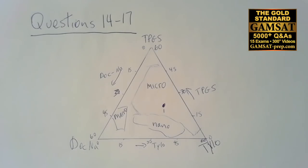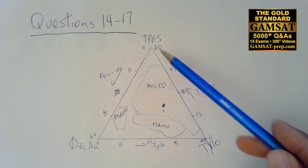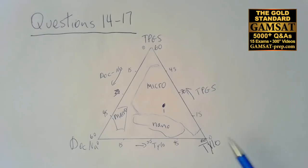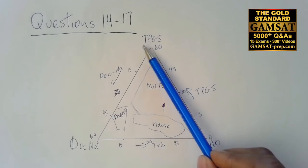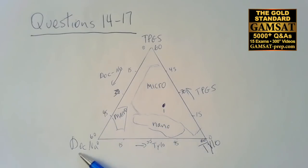And the other thing that I would do right from the beginning is I would label the corners. I can see that this is increasing TPGS so I put TPGS at the top, increasing DOCNA so I put DOCNA in the bottom left corner. This also again helps me to focus my eyes on what I need to see.